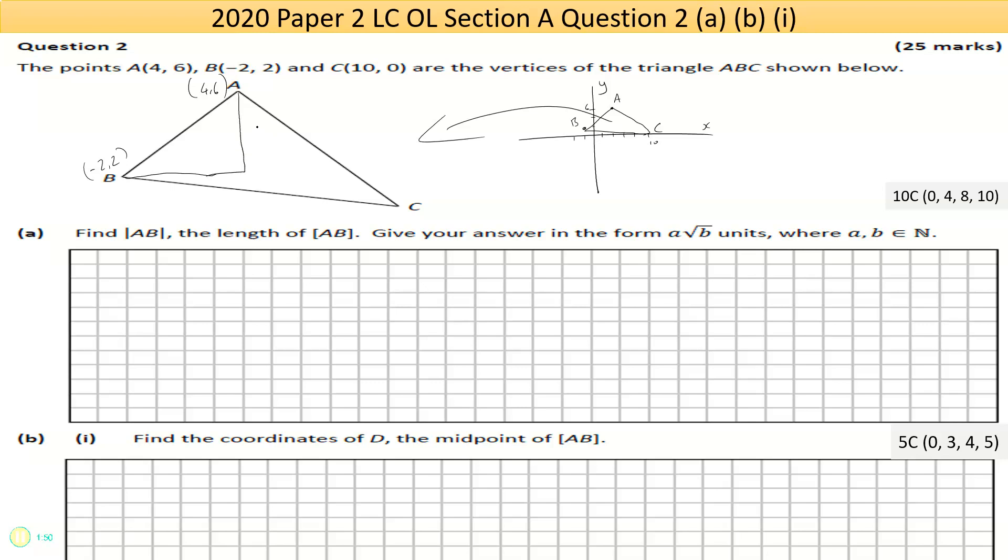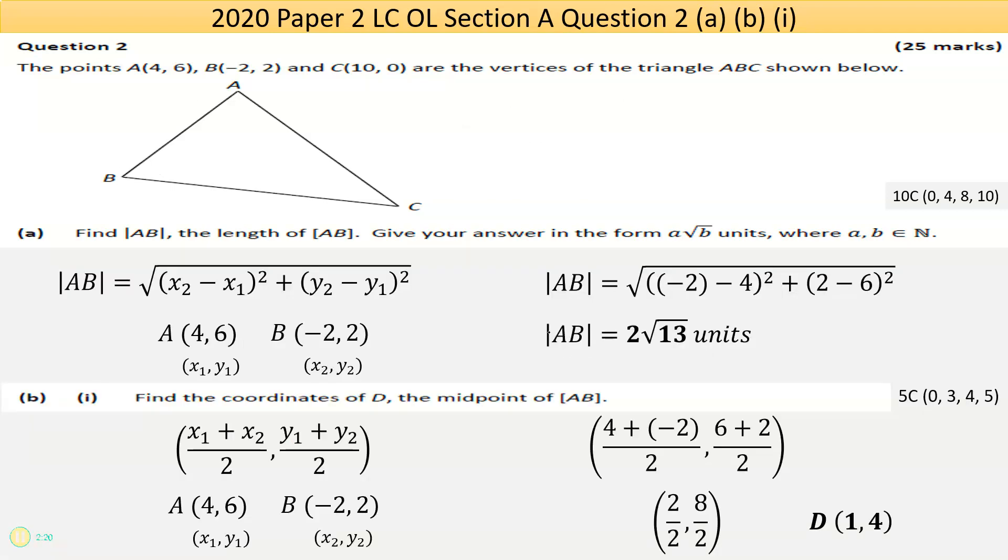You could use Pythagoras by creating this triangle here. That's a difference of 6 units and a difference of 4 units. So the hypotenuse squared is equal to the sum of the squares of the other two sides, 4 and 6. The answer should be the square root of 52, which is 2 times the square root of 13.